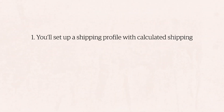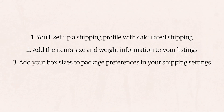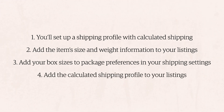Here's an overview of how it works. One, you'll set up a shipping profile with calculated shipping. Two, add the item size and weight information to your listings. Three, add your box sizes to package preferences in your shipping settings. Four, add the calculated shipping profile to your listings.